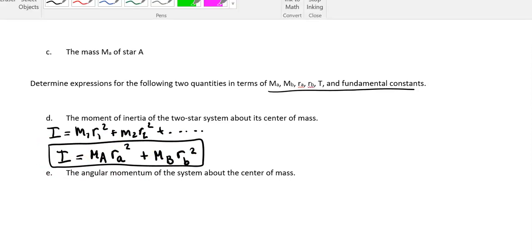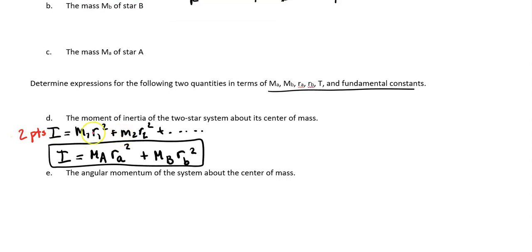M₁ is going to be M_A times radius of A squared plus M₂ is going to be the mass of B times the radius of B squared. We got our answer. The AP rubric for this one is worth three points, so it's two points for getting the correct moment of inertia equation, writing that equation down, and then one point for the correct answer.